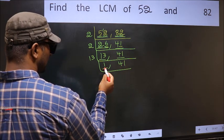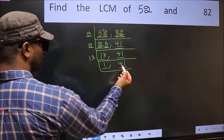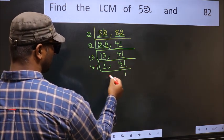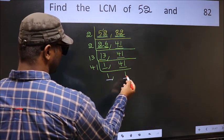Now we got 1 here. So focus on the other number 41. 41 is a prime number. So 41 once 41. So we got 1 in both the places.